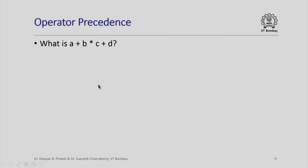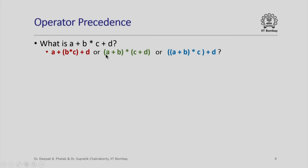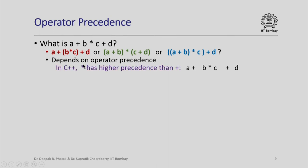Now let us look at how we read expressions written in C++. Consider the expression A plus B star C plus D. Should B star C be evaluated first, or should A and B be added and then multiplied? This depends on operator precedence. In C++, star (multiplication) has higher precedence than plus, so this expression means: evaluate B star C first, then add A and D to it.